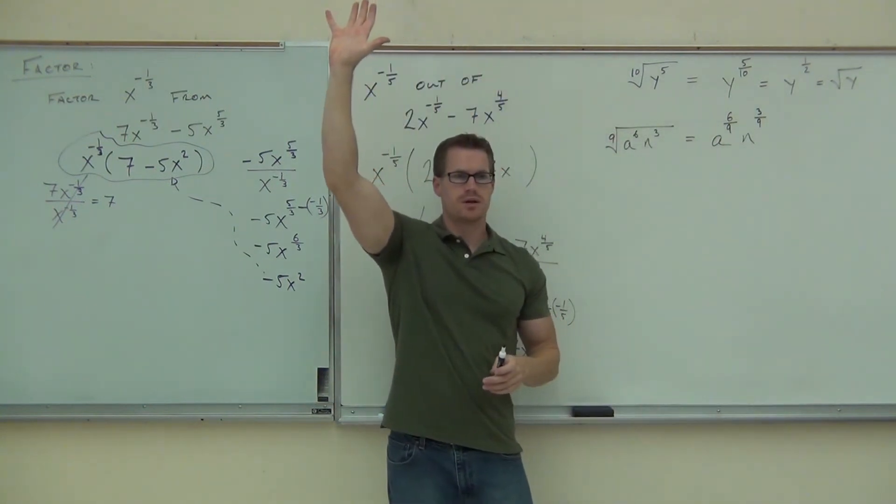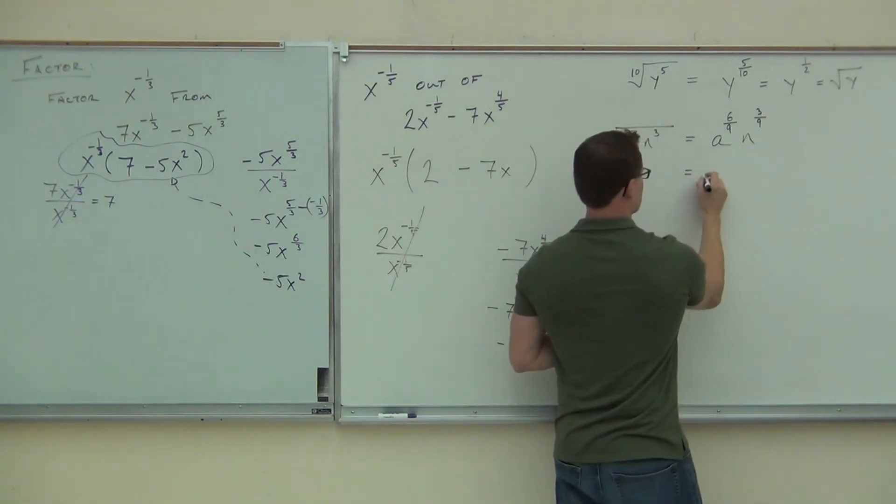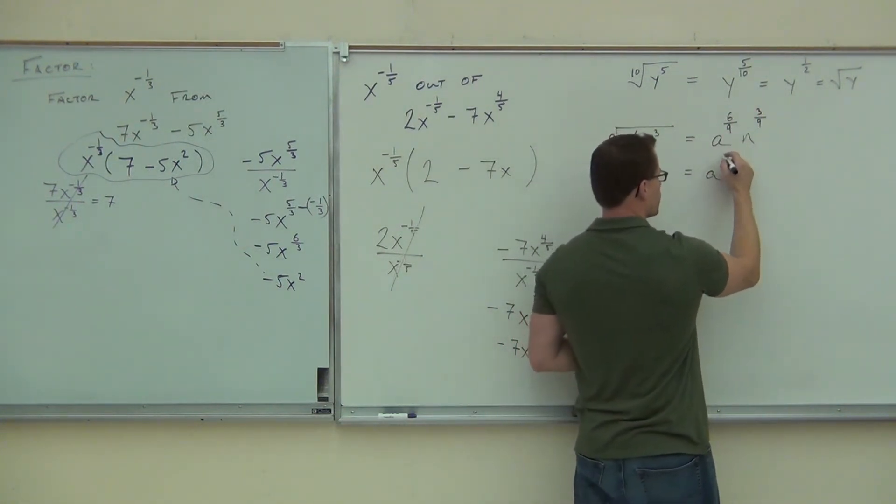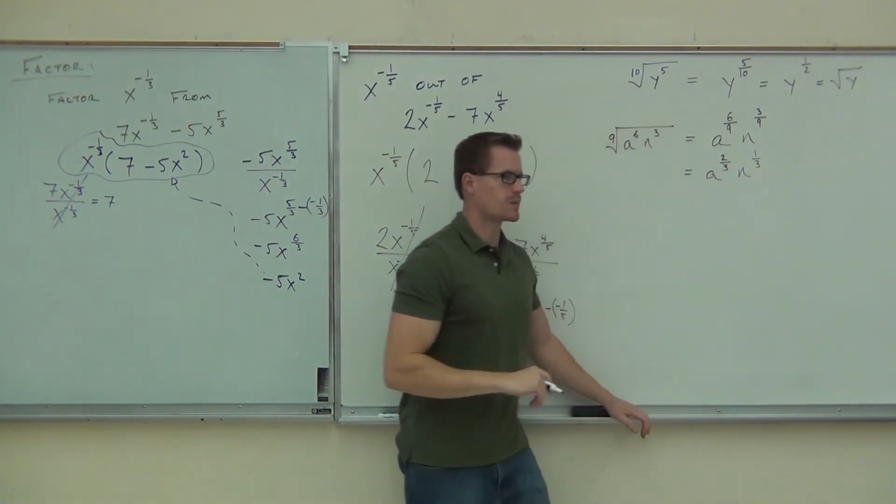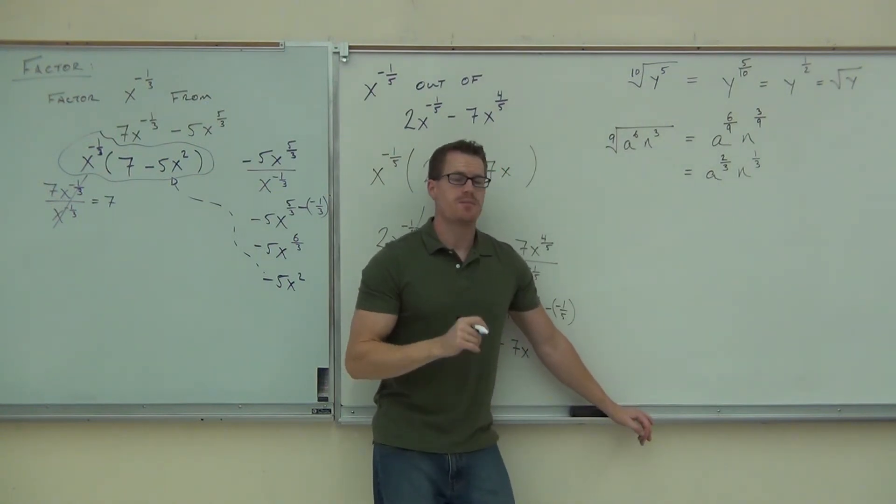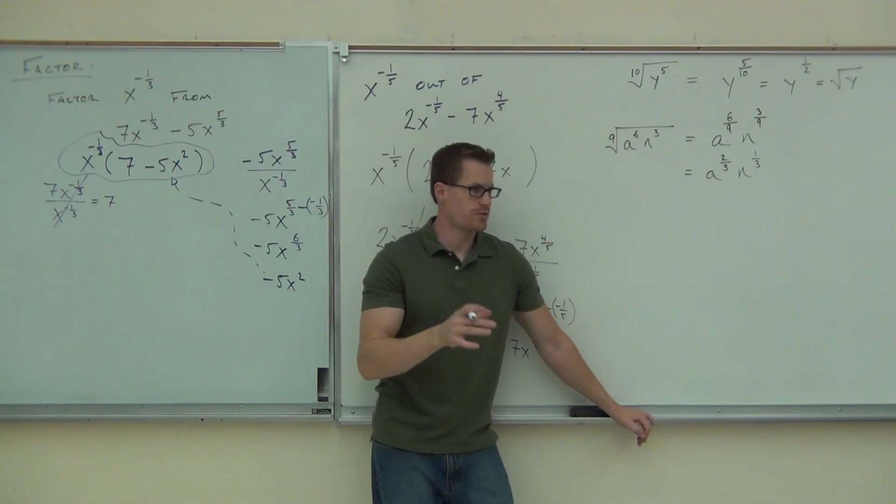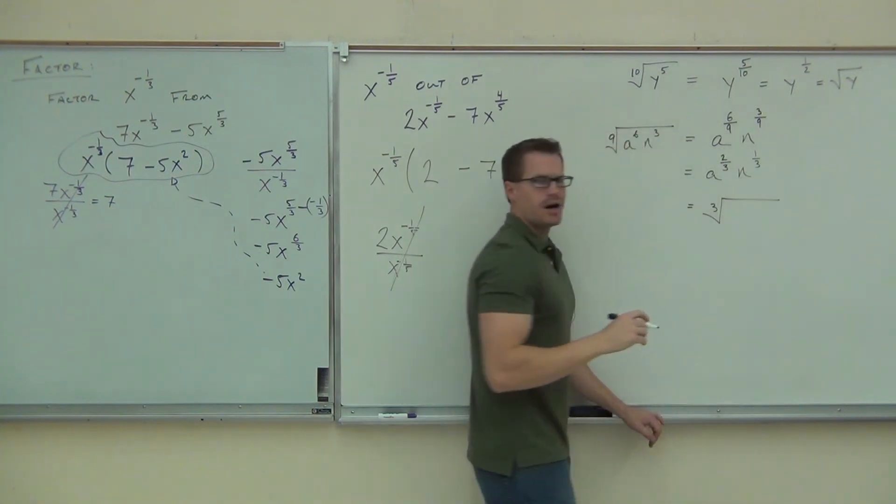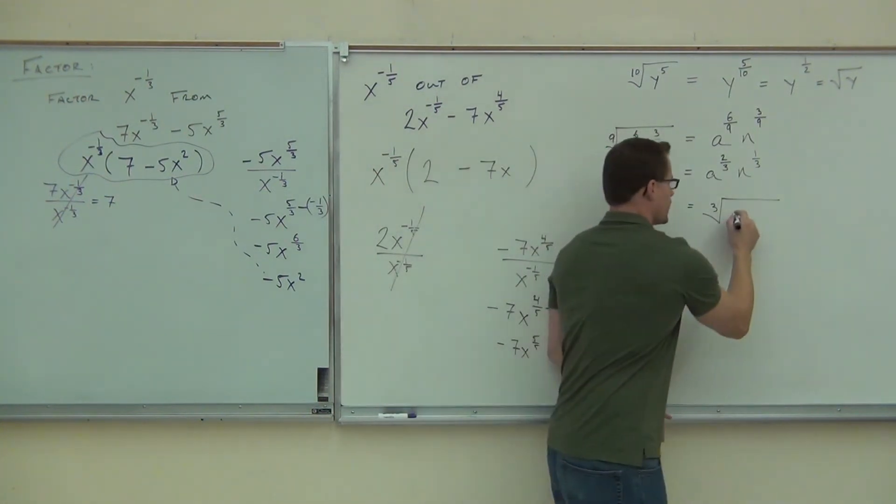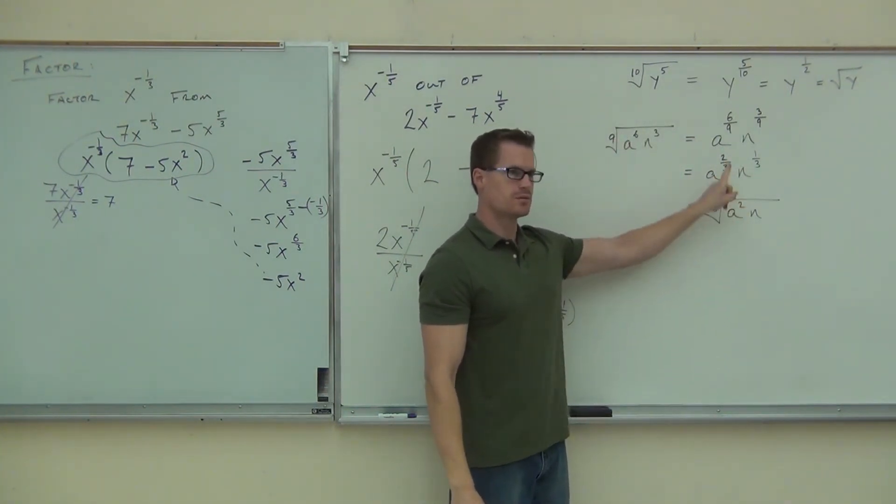I feel okay with that so far. Can you simplify those fractions? That gives us two thirds and one third. The three goes into all of that stuff. So far, so good? Now, can you write that back as a root? Third root. Why a third root? Because the denominators are three. That means that we're going to certainly have a cube root. A to what power? Square. And n to what power? First. Does this represent that okay for you? And we're done.